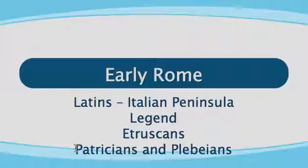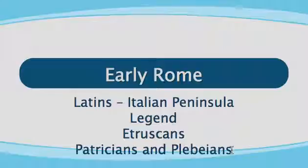Now let's talk about the Plebeians. This is the working class — common people, farmers, traders, and craftsmen. I want to point out that there are only two social classes, which means you're either in one or the other. There was no middle class like we think of in our culture today — you were either rich or you weren't. One thing these two groups had in common: the Patricians and the Plebeians were both hard-working and they valued freedom and self-government.